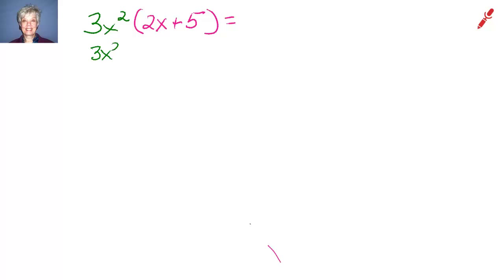All right, we take the 3x² and multiply it by the first term of the binomial, which is 2x. Copy down the plus sign and write 3x² times the second term of the binomial, which is 5.